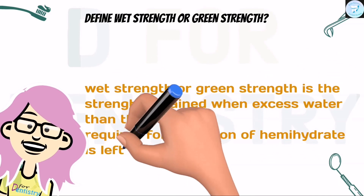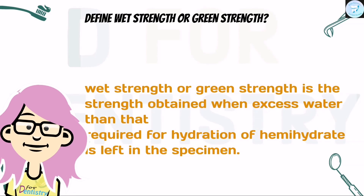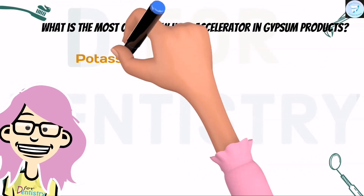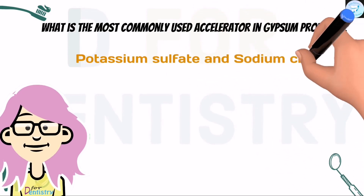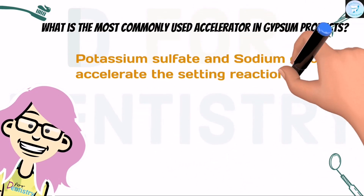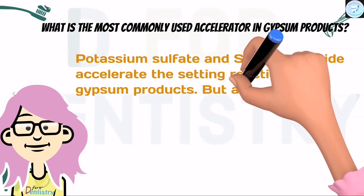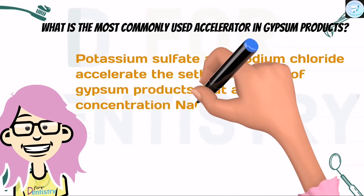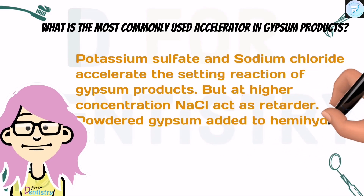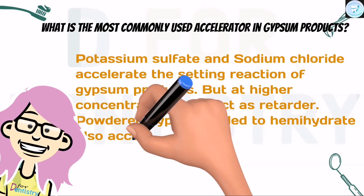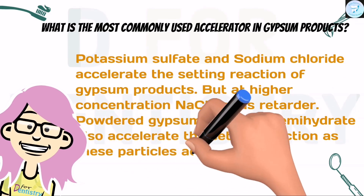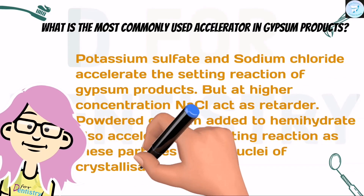What is the most commonly used accelerator in gypsum products? Potassium sulfate and sodium chloride accelerate the setting reaction of gypsum products, but at higher concentrations NaCl acts as a retarder. Powdered gypsum added to hemihydrate also accelerates the setting reaction, as these particles act as nuclei of crystallization.